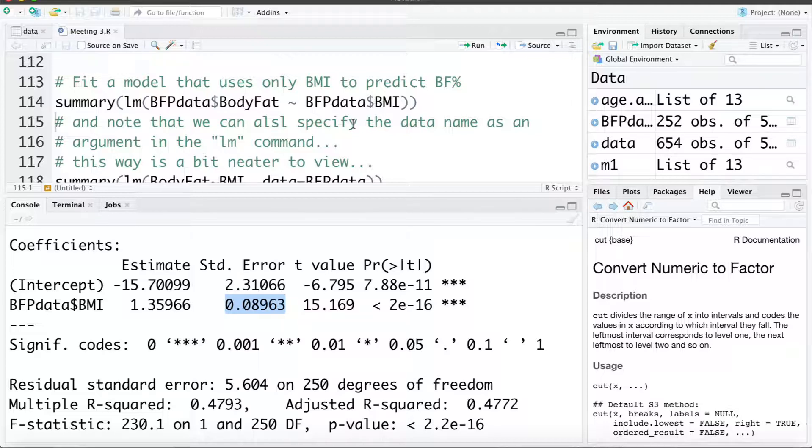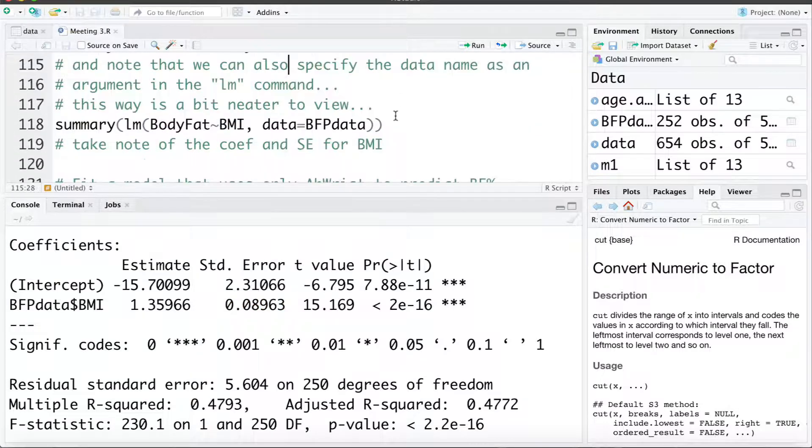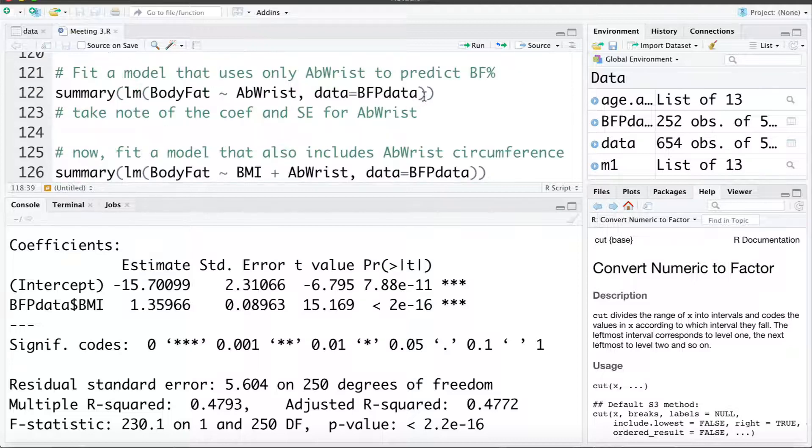Now a quick reminder what do we say happens when we have two variables that are collinear? The coefficients get distorted, they get biased, they may not change, may increase, may decrease, but the standard errors tend to inflate. And just a quick side note here, rather than using the dollar signs we could also fit a model that uses BMI to estimate body fat percentage and specify that the data we're working with is the BFP data. So just a different way of coding this up. Here I'm going to fit a model that uses the abris circumference to estimate body fat percent and specifying the data set that it's in. So just using that slightly different way and asking for a summary of that, let's take a look at that here.